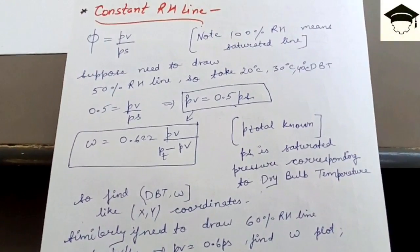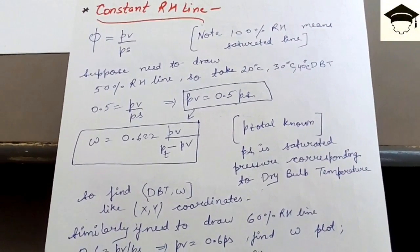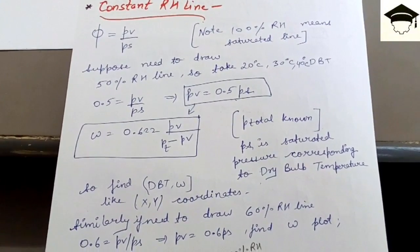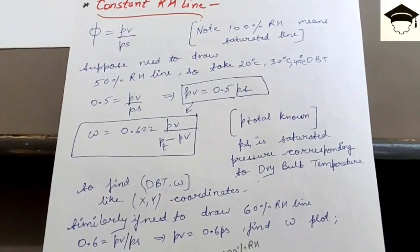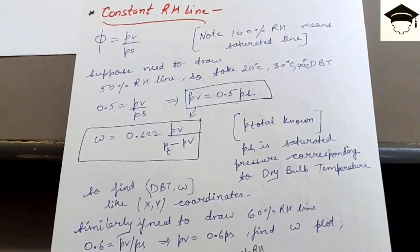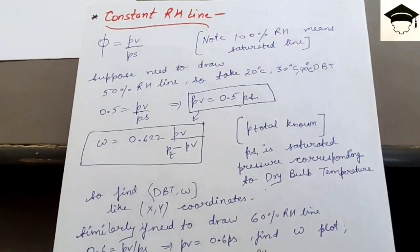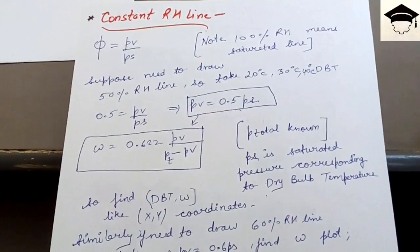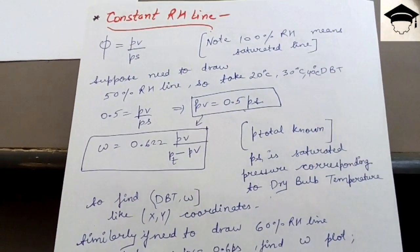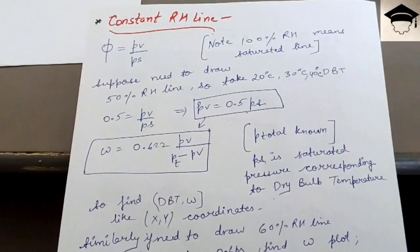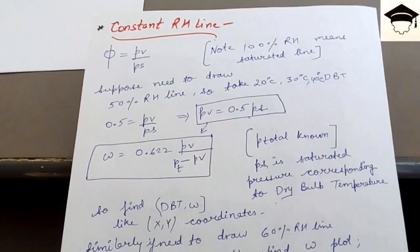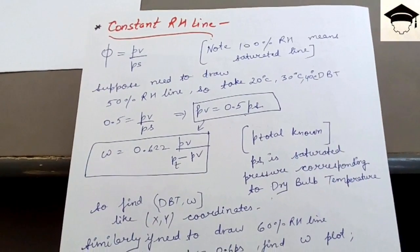Hello everyone and welcome to my channel. In this video I would be explaining the construction of the psychometric chart, continued from the previous lecture. In the previous lecture we saw how to draw the saturation line. In this video we will see how to draw the constant relative humidity line.